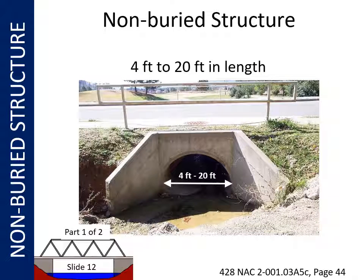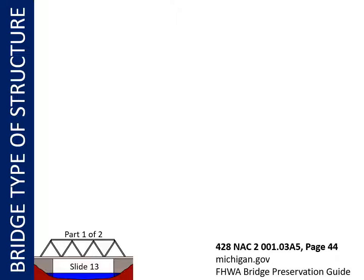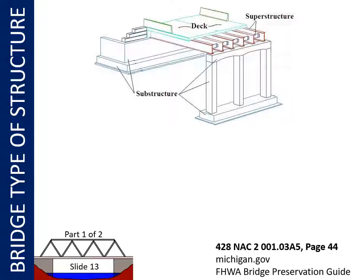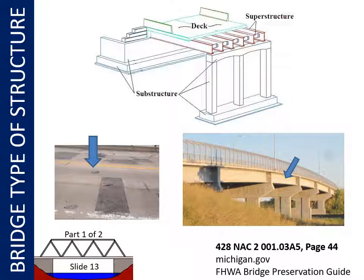A non-buried structure has 2 feet or less of fill or pavement on top. In this video, there are terms specific to the major parts of a bridge type of structure. The three main portions are: the deck, which directly carries traffic; the superstructure, which supports the deck and connects one substructure element to another; and the substructure, which supports the superstructure and distributes all bridge loads to below-ground bridge footings. Abutments and piers are typical parts of a substructure.